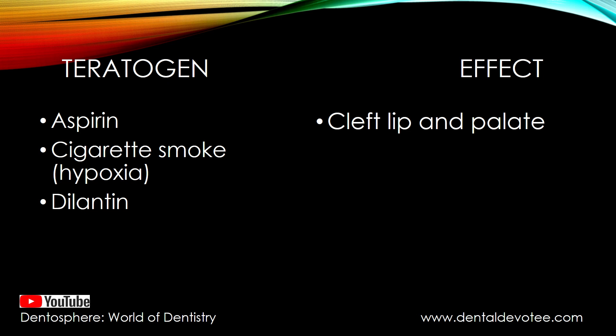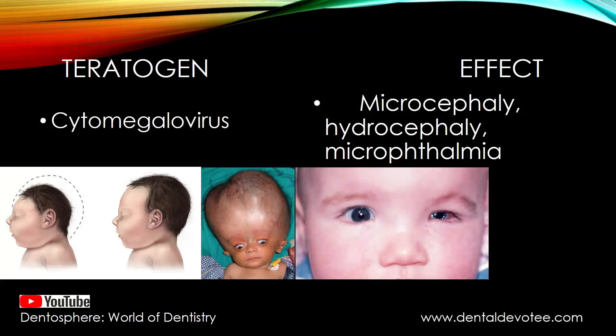Moving to the next: aspirin, cigarette smoke, and dilantin — all three of these teratogens share a common effect, which is cleft lip and palate. Aspirin, cigarette smoke, and dilantin all cause cleft lip and palate.